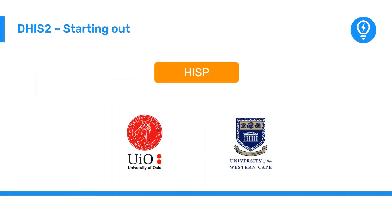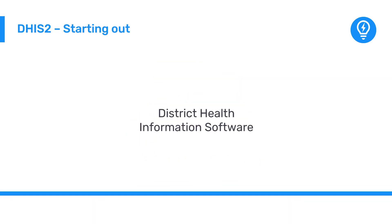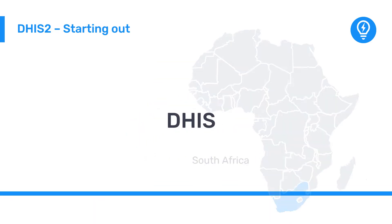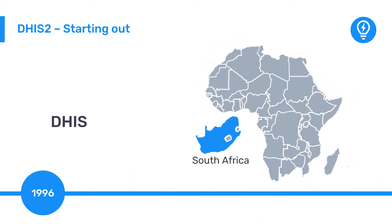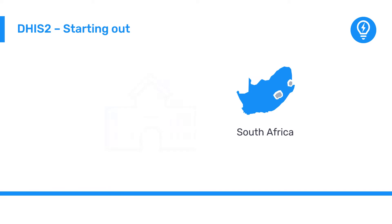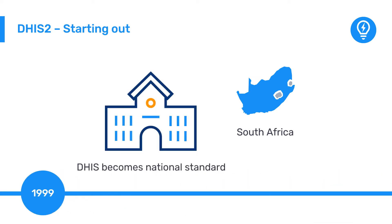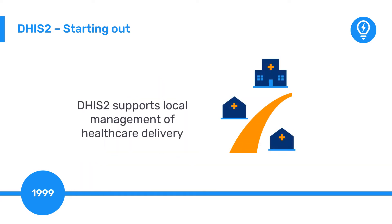As a result of the HISP collaboration, the District Health Information Software, or DHIS, was launched in South Africa in 1996, starting in one district and becoming their national standard health information system in 1999. From its initial conception, the core aim of DHIS-2 has been to support local management of healthcare delivery and information flow in low- and middle-income countries.